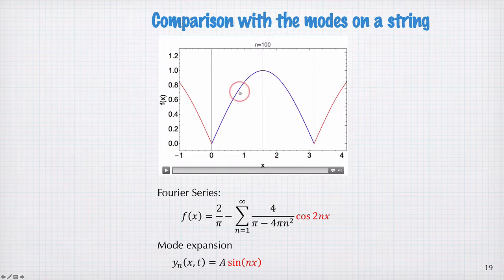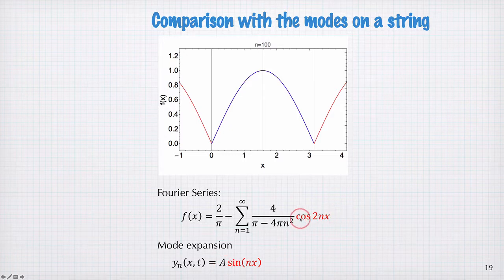But a half sine wave like this is also a mode of a string, if we clamp it here and here. And in this case, the mode expansion looks like this. And you can see this is made of sine functions with some amplitude, and this is made of cosines with some amplitude and some offset. So we get two different answers. So my question is why? And we can puzzle this out and discuss it in a workshop.